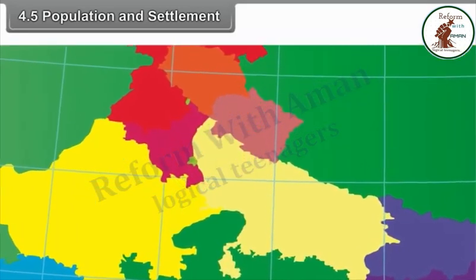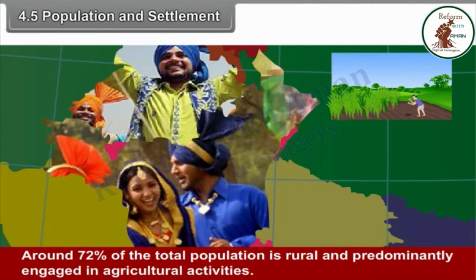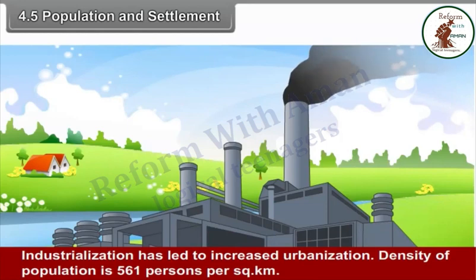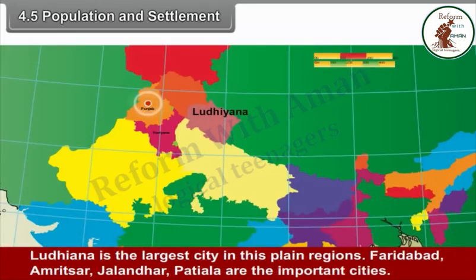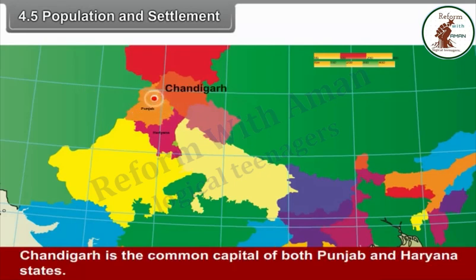4.5 Population and Settlement. According to the 2011 census, the total population of both states is 5.30 crores. Around 72% of the total population is rural and predominantly engaged in agricultural activities. Industrialization has led to increased urbanization. Density of population is 561 persons per square kilometer. Ludhiana is the largest city in this plain region. Faridabad, Amritsar, Jalandhar and Patiala are important cities. Chandigarh is the common capital of both Punjab and Haryana states.